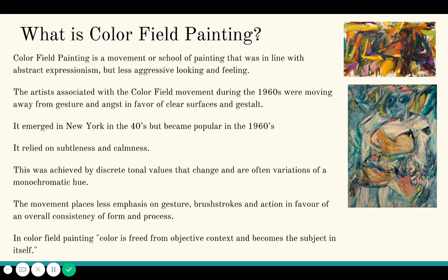The avant-garde nature of this movement is really about freeing color from its objective context. When color has to become something recognizable — for example, blue dots on a canvas that our brain interprets as rain — color field painters really want viewers to understand that color doesn't have to become something recognizable. The paintings can be just about color themselves.